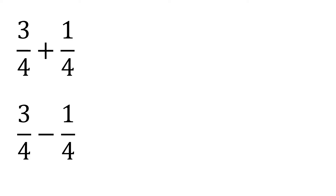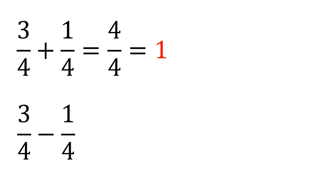Starting with addition: we have three-fourths plus one-fourth. We copy the denominator since it's the same, and the top is just added directly — three plus one is four, so it's four over four. But we always have to reduce it to simplest form, so four divided by four is one.